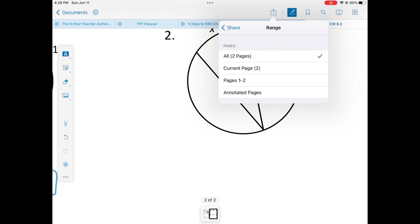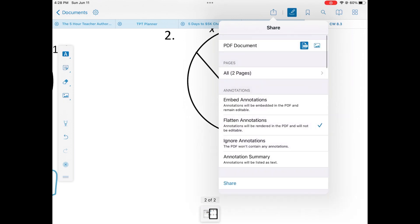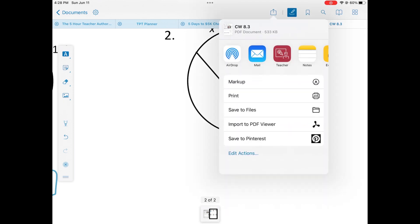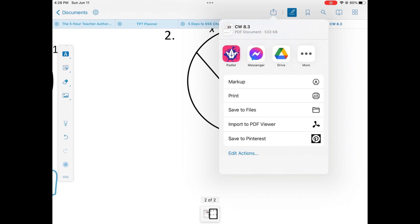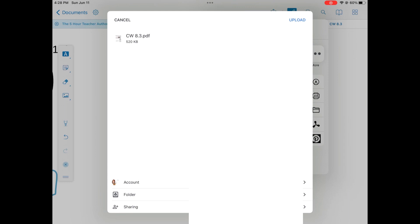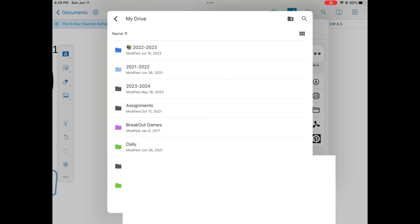And then you can choose to upload just one page, all of the pages, the ones that are annotated. And then I send these back to my Google Drive. So I click on my drive. And then I save them in the exact same place where I had the blank PDF. And that just makes it easiest for me to find.